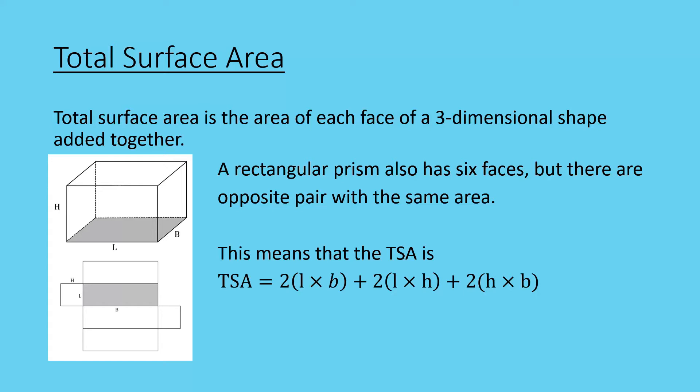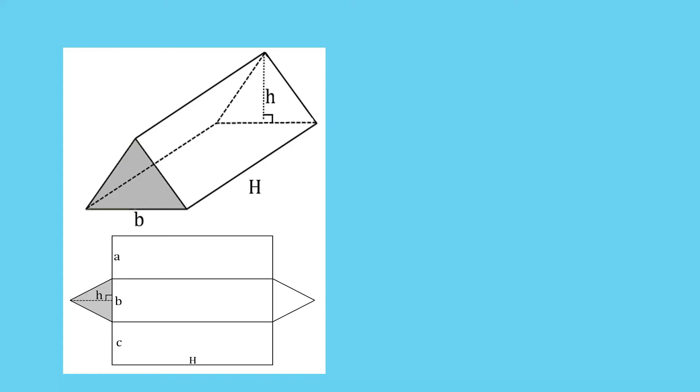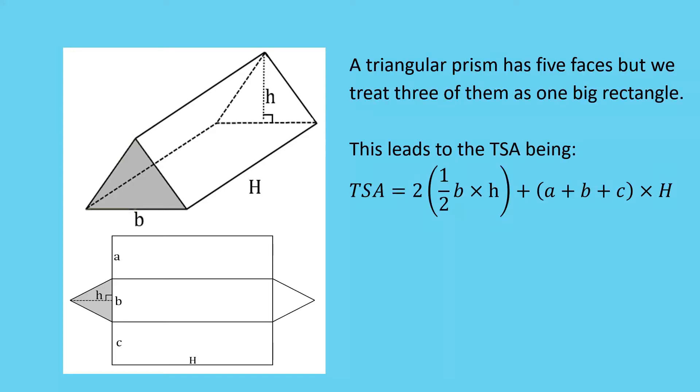Now if we look at the triangular prism and the net, you'll notice that in this respect we've got the five faces cut up here. So with that, there are five faces, but two of them are triangles and one is a big rectangle. If you look at a, b, and c, that could all be one length, and h is another length. So that's why we use that formula for our total surface area there - two times the